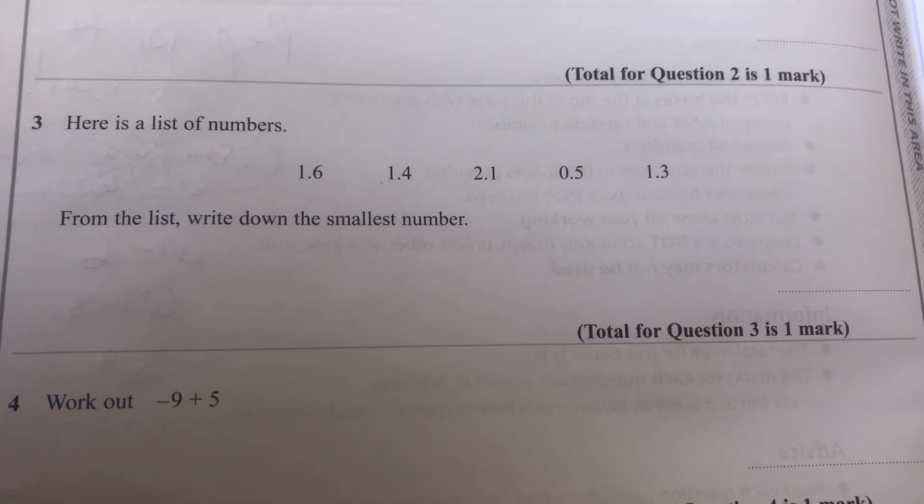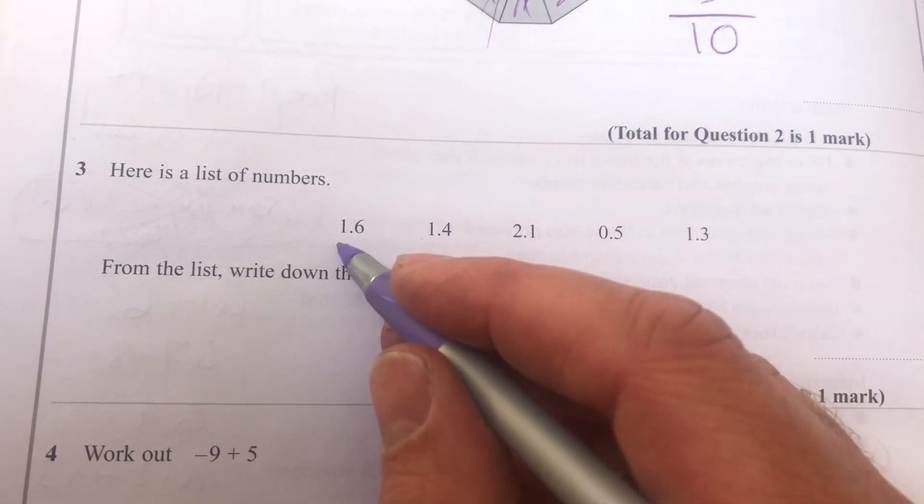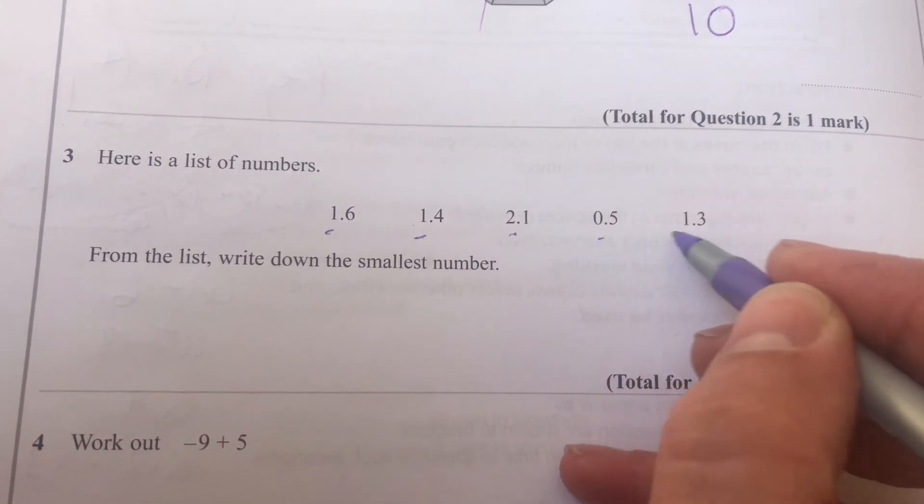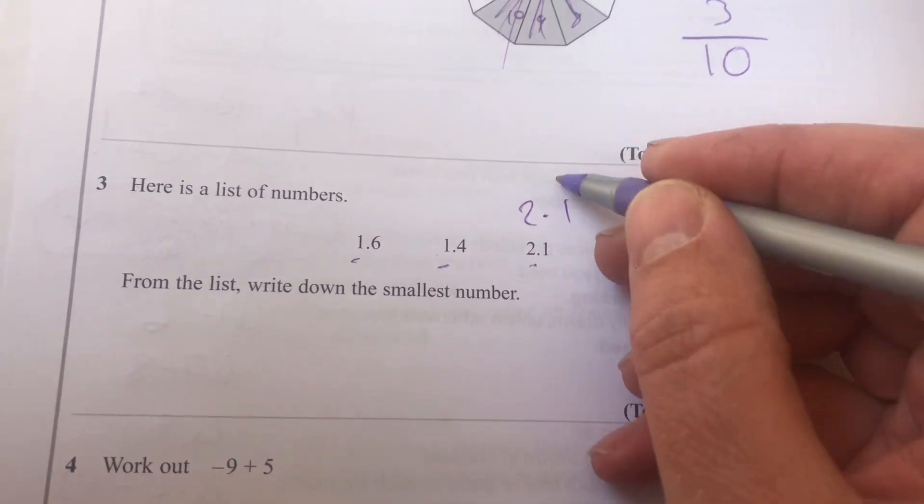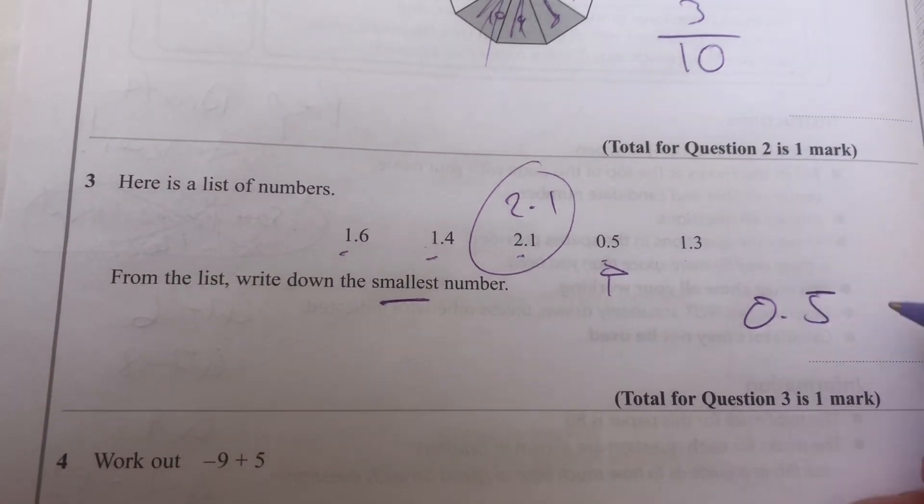Here is a list of numbers, and from the list write down the smallest number. If we look at the first place value - the units - 2.1 would be the biggest. For the smallest, it's going to be 0.5.